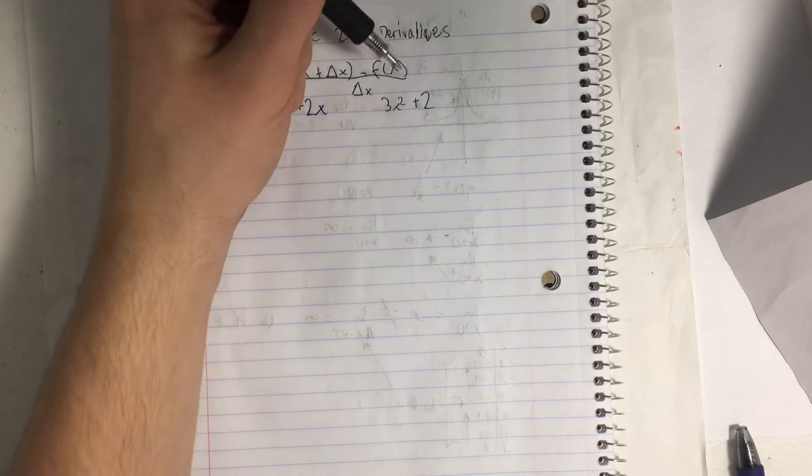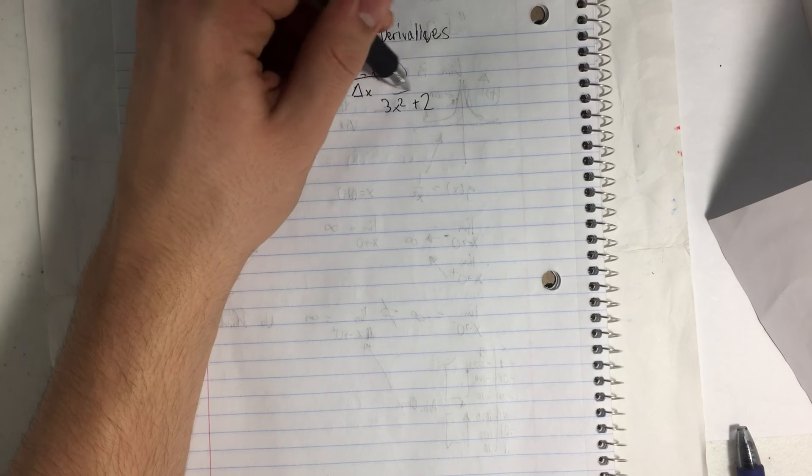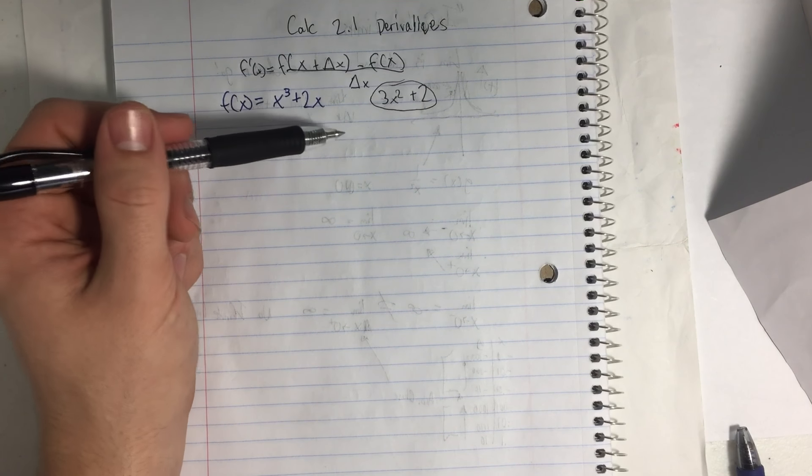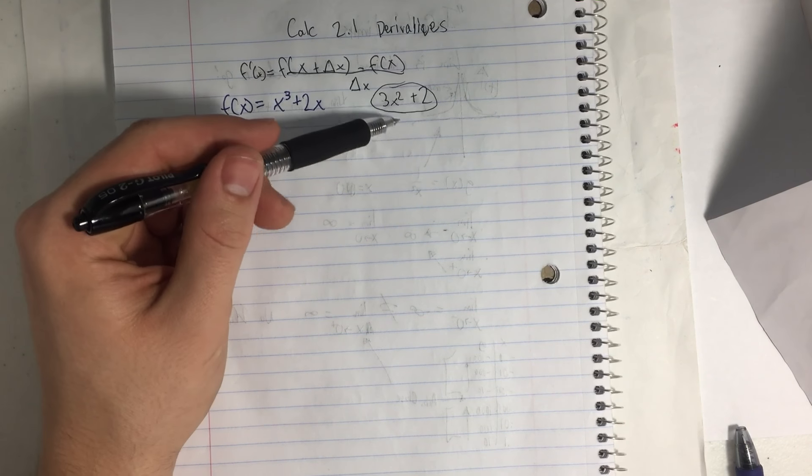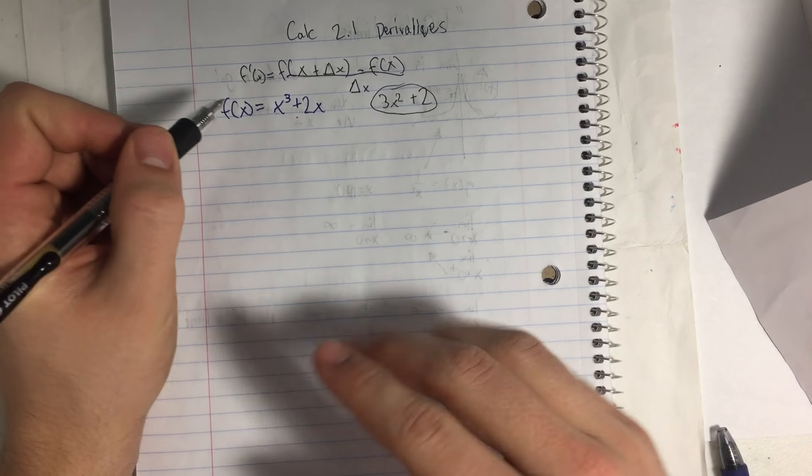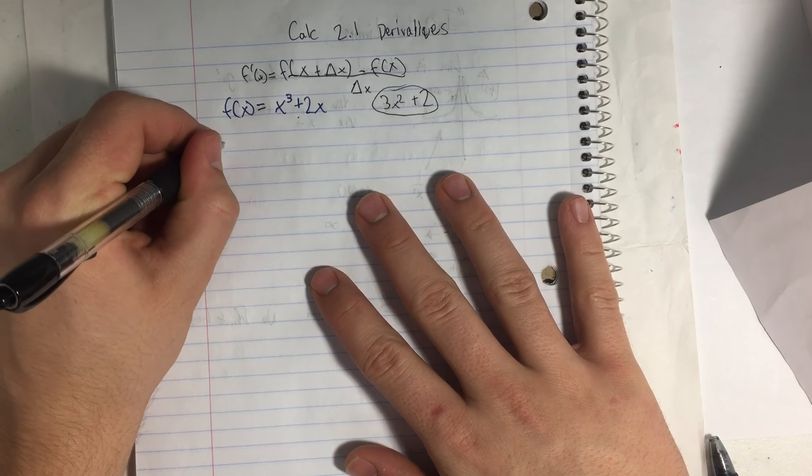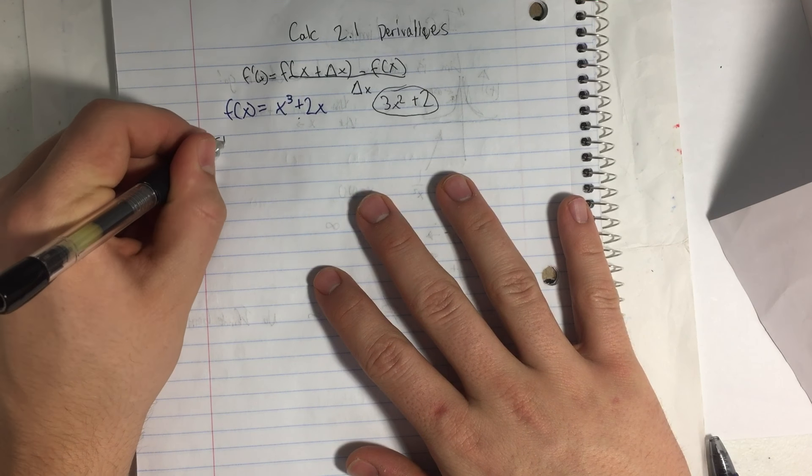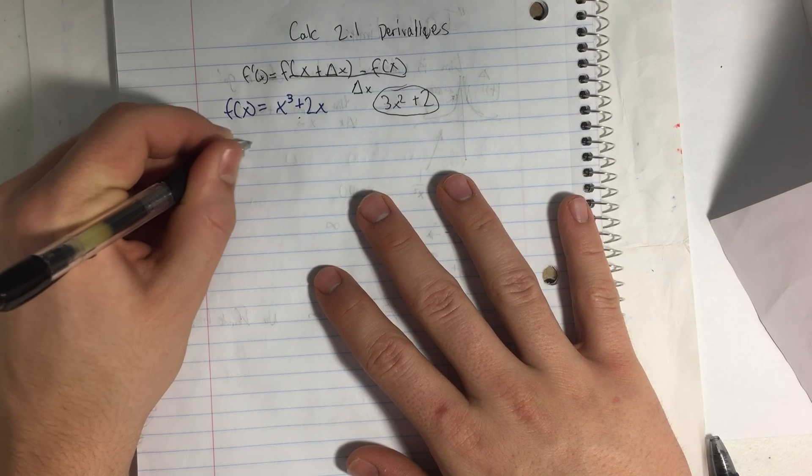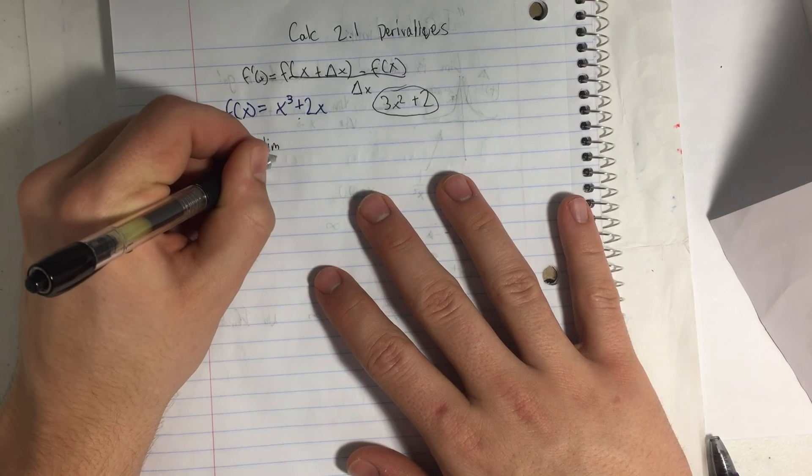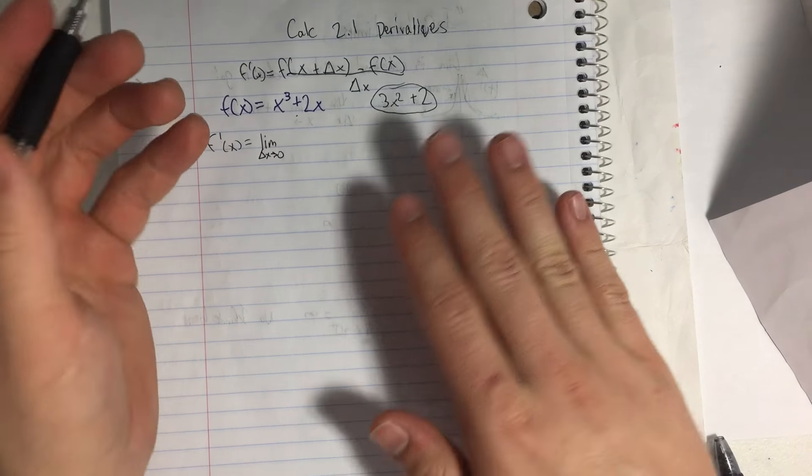And so what I'm going to try to show you is that the derivative is 3x² + 2. Okay, so this should be the answer if we do it right. And tomorrow I'm going to show you how you can do that derivative in your head. So stick around. So we're going to find the limit.